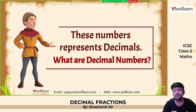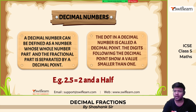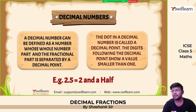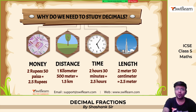So what are decimal numbers? Decimal numbers can be defined as numbers which have two parts: the whole part and the fractional part, where the fractional part is separated by a decimal point. The dot in a decimal number is called the decimal point. The digit following the decimal point shows a value smaller than one. For example, 2.5 is nothing but two and a half — this 0.5 is less than one.